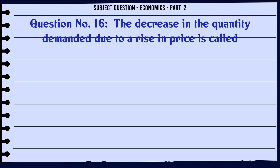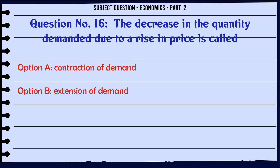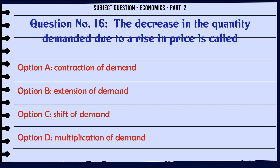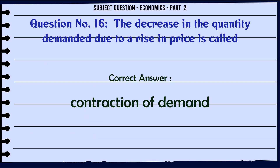The decrease in the quantity demanded due to a rise in price is called: A. Contraction of demand. B. Extension of demand. C. Shift of demand. D. Multiplication of demand. The correct answer is: Contraction of demand.